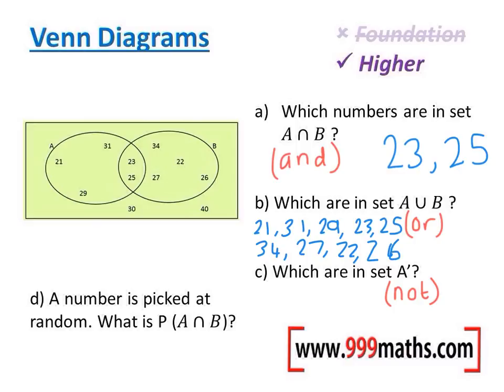Finally, which are in set A' or NOT in A? Well, these ones over here are NOT in A, and these two down here are NOT in A. All of these are in A. So the ones that are NOT in A are these ones: 34, 22, 27, 26, 30, and 40.